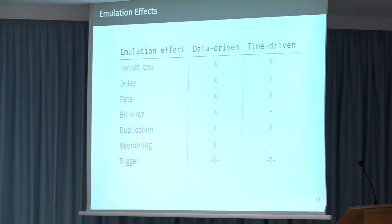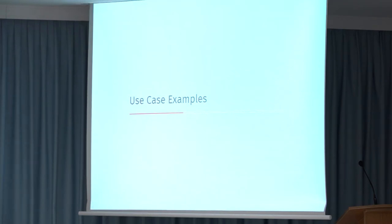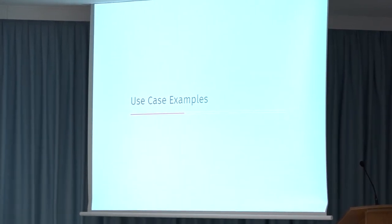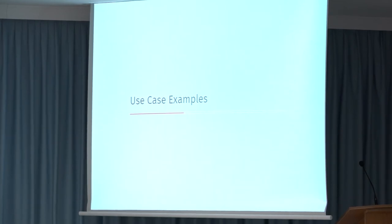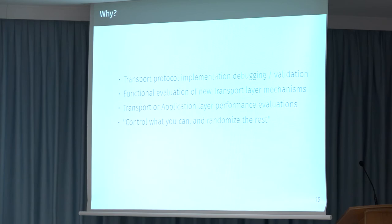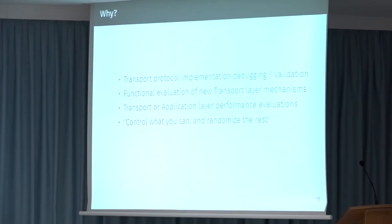That covers the range of emulation effects available. Now we come to some use case examples — how can deterministic emulation be used? It is very useful if you want to validate your implementation, ensuring your transport protocol implementation conforms to the specification. You need to test many cases — for example, testing the tail loss probing functionality — and you need to be able to control exactly where packet losses happen.